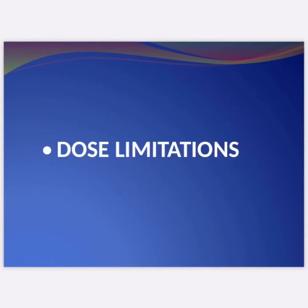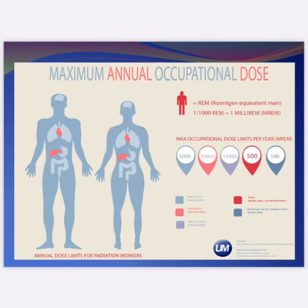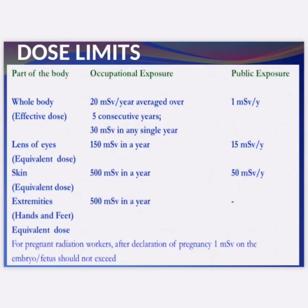Dose limitations cover: whole body effective dose, lens of eyes equivalent dose, skin equivalent dose, and extremities (hands and feet) equivalent dose. For pregnant radiation workers, after declaration of pregnancy, dose to the embryo or fetus should not exceed 1 mSv. Occupational exposure limit is 20 mSv per year averaged over 5 consecutive years. Public exposure limit is 1 mSv per year, with specific tissue limits of 150 mSv and 50 mSv per year for eyes and extremities respectively.